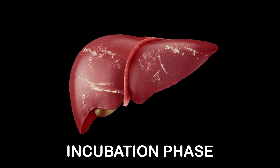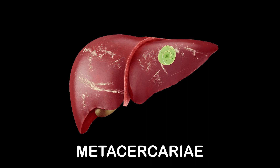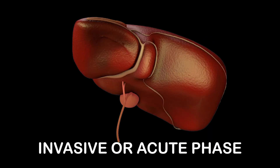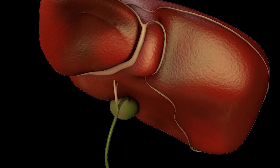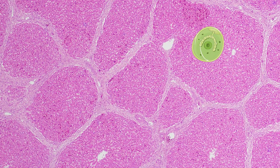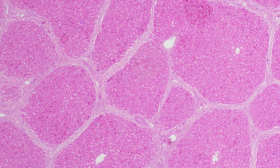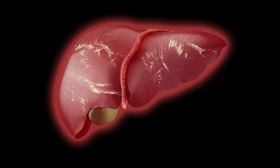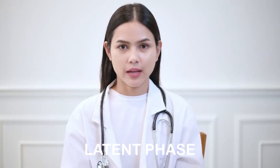The incubation phase starts from the ingestion of metacercariae to the appearance of the first symptoms. The invasive or acute phase is where the fluke migrates up to the bile ducts, resulting from mechanical destruction of the hepatic tissue and the peritoneum by migrating juvenile flukes, causing localized or generalized toxic and allergic reactions. The major symptoms of this phase are hepatomegaly and splenomegaly, ascites, anemia, jaundice, and fever. There are also the latent phase and chronic or obstructive phase as the third and fourth phases.